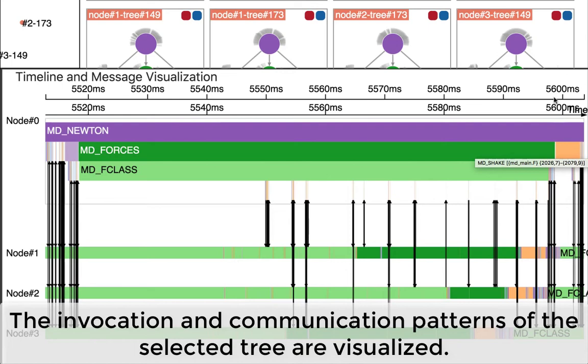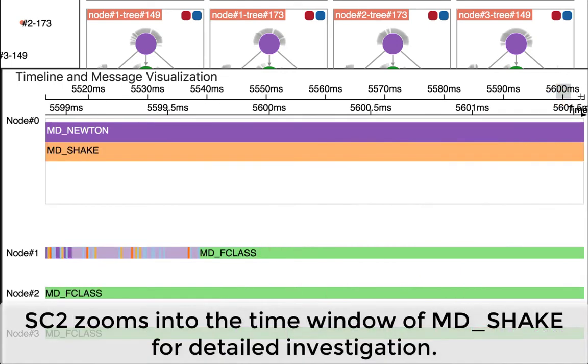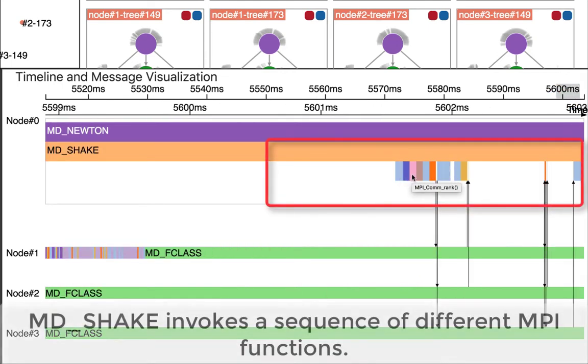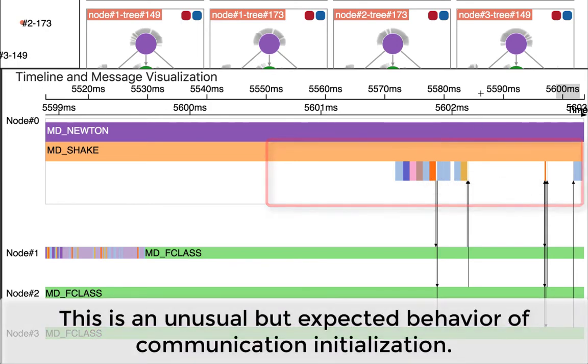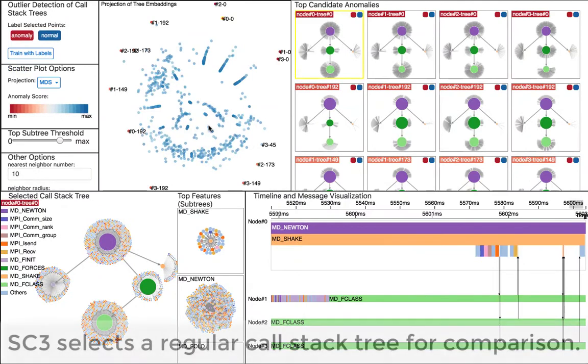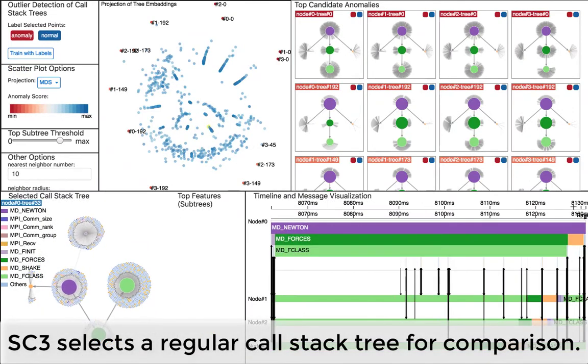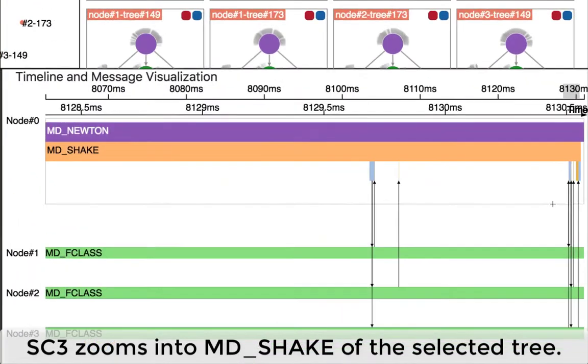In the timeline view, he finds that MDShake calls lots of MPI functions. This indicates the initialization of communication between nodes. For comparison, he also explores a regular execution of MDShake. It has few MPI functions.